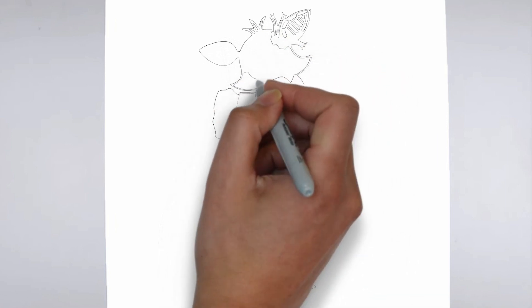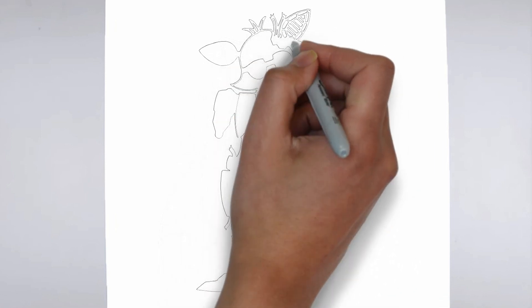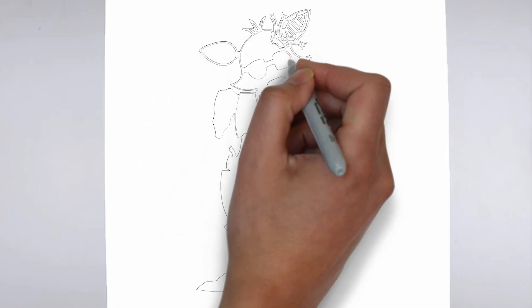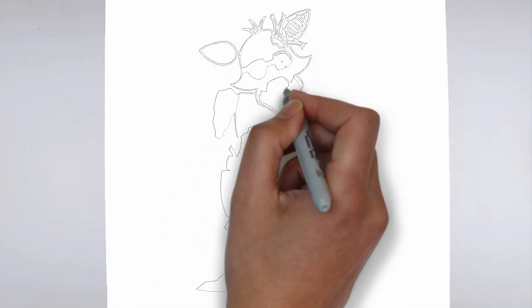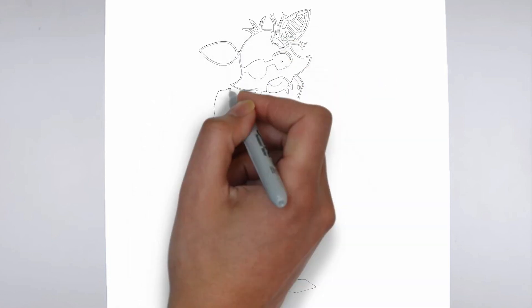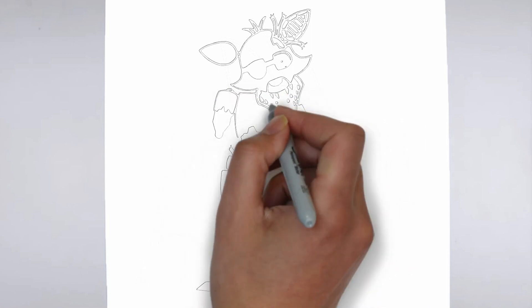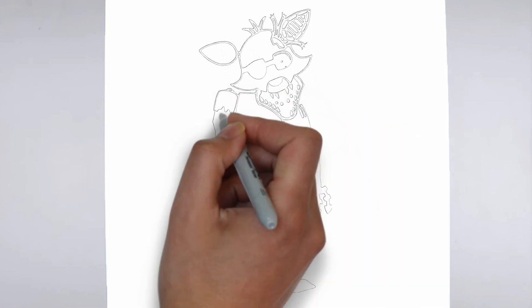As you continue to add in more details, remember to keep your strokes light and controlled. You can always go back and darken lines later, but it's harder to erase mistakes if you've applied too much pressure from the start.